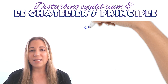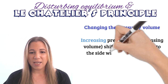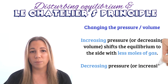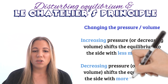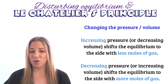Starting with a change in pressure or volume — if we increase the pressure on a system, then we are decreasing the volume, and vice versa. This is only relevant for reactions that involve gases in either the reactants or the products, or both. Increasing the pressure or decreasing the volume shifts the equilibrium to the side where there are fewer moles of gas. Decreasing the pressure or increasing the volume shifts the equilibrium to the side with more moles of gas.